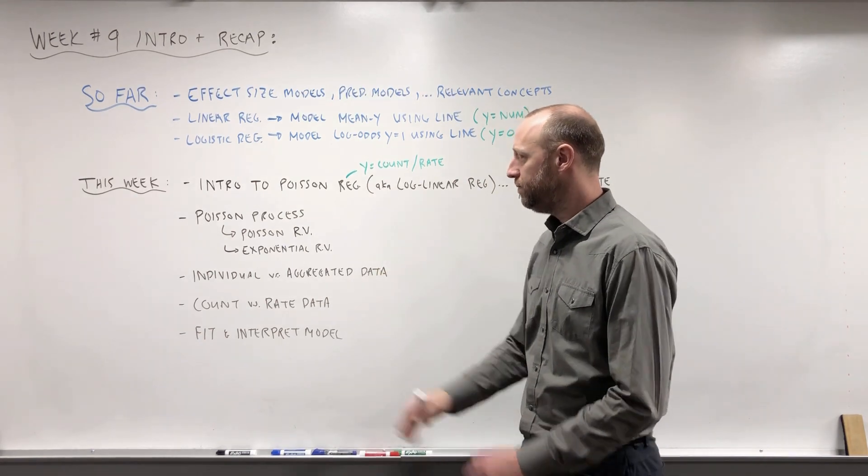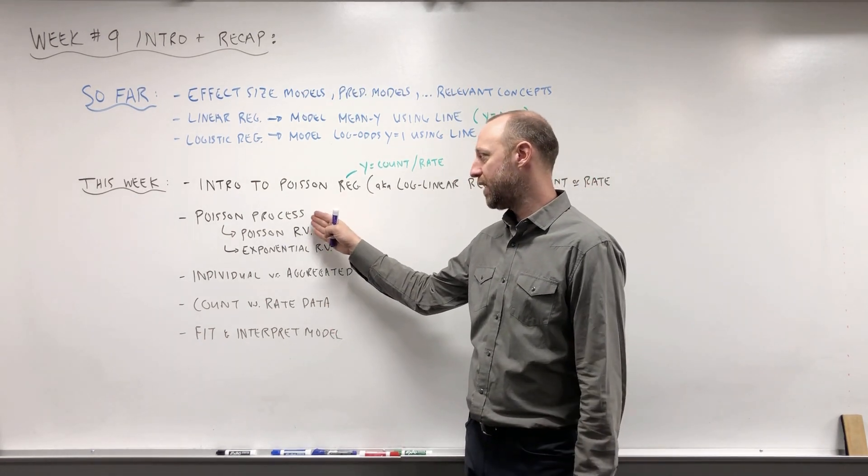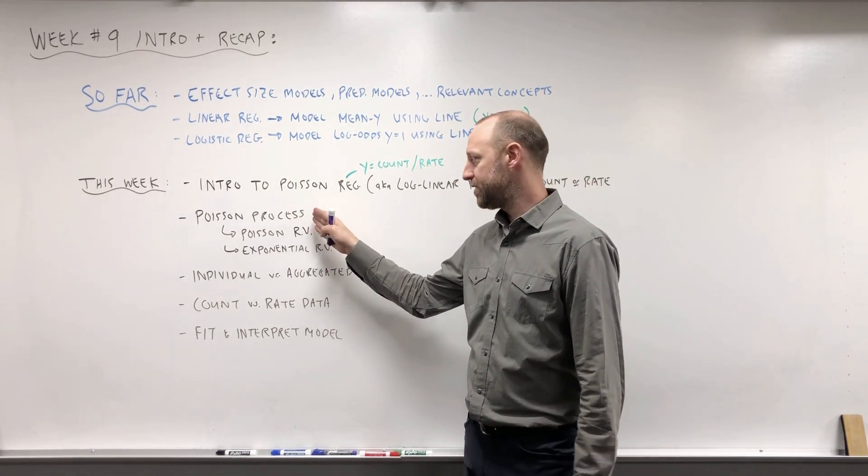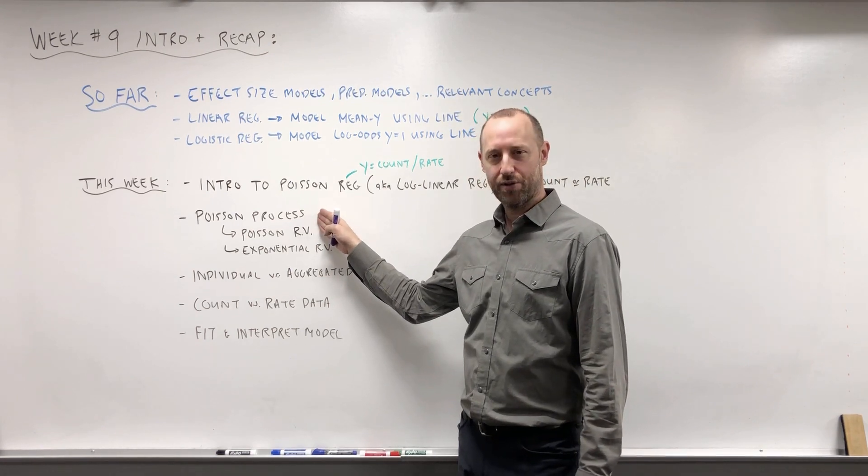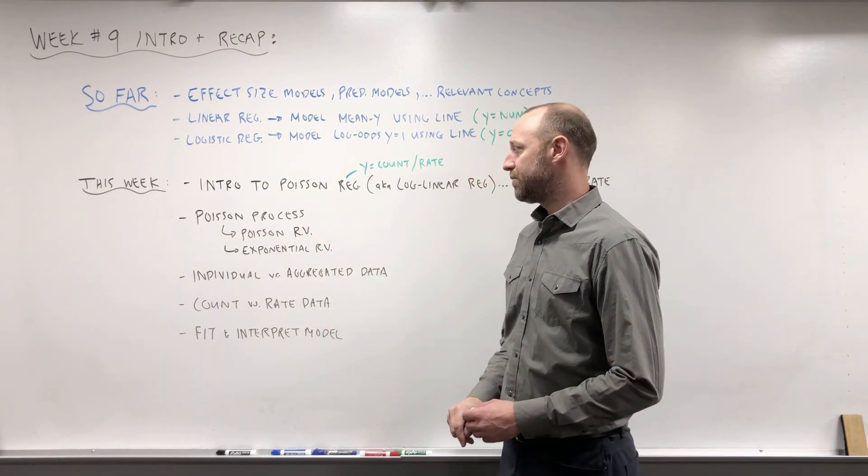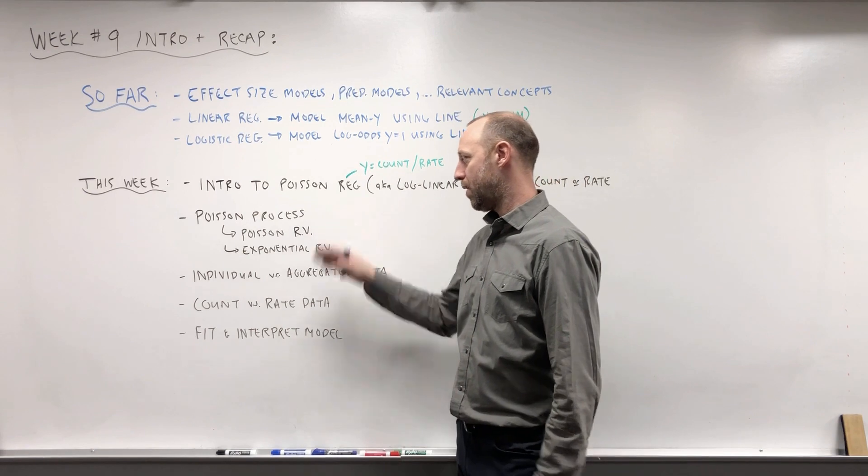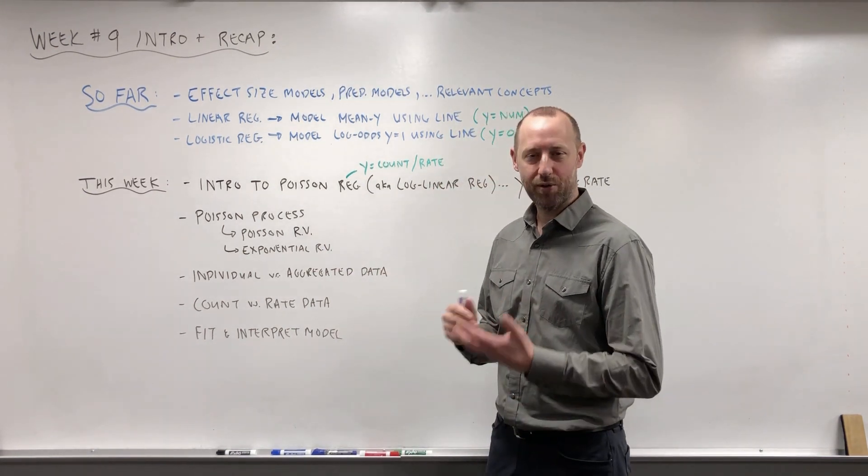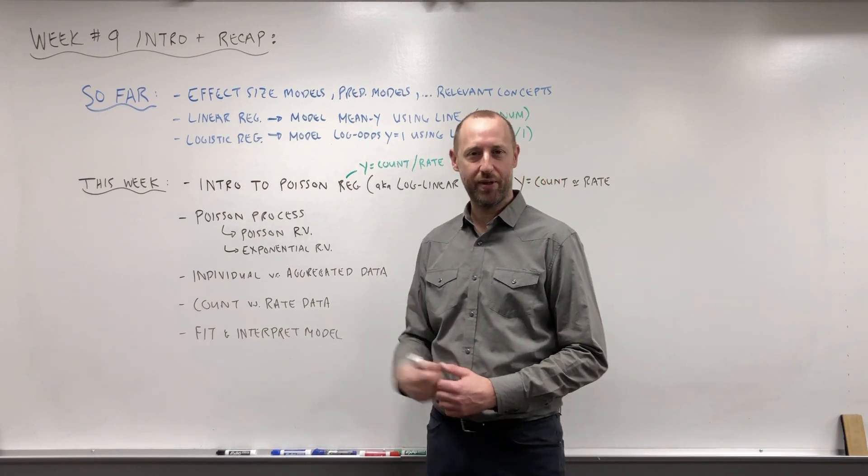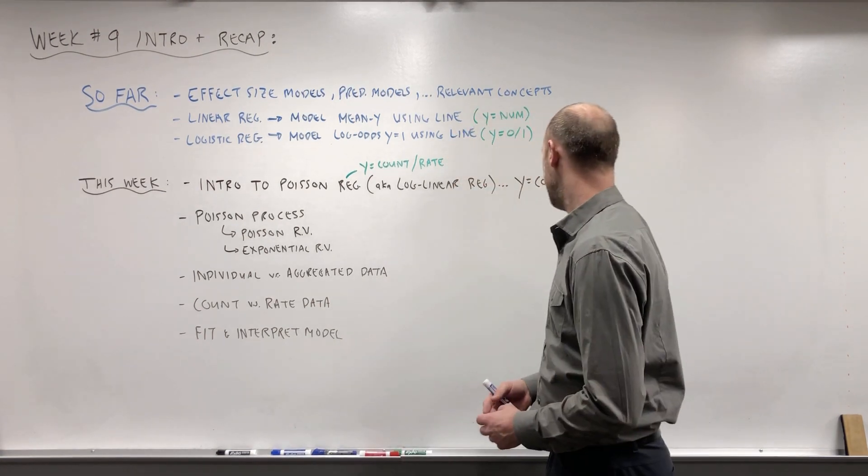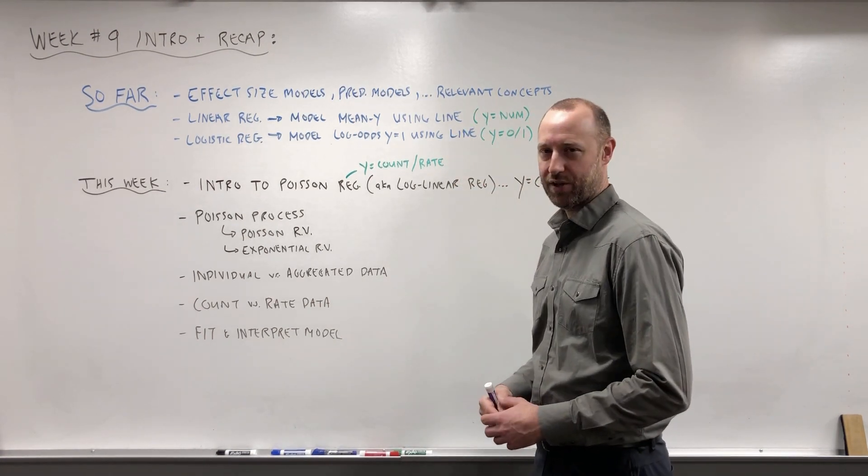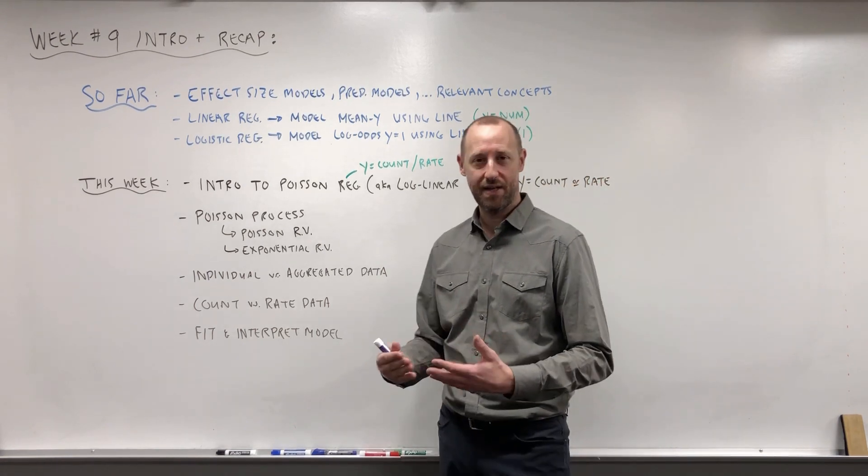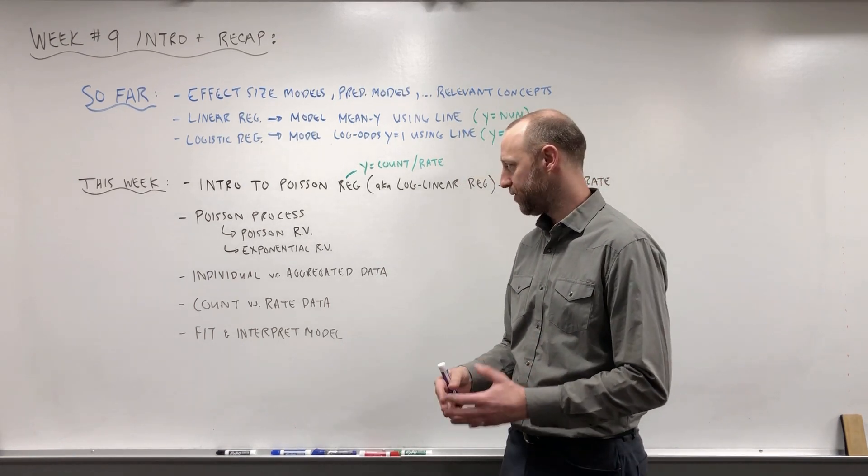So to get our way there, what we're going to do is first briefly recap the Poisson process. This is a topic often covered in intro statistics courses or intro probability courses. It's where we start with, let's suppose we know the truth and see what happens when we collect some data. So if we knew the true rate at which events occur, how often are we going to see the event happen in a specified period of time?